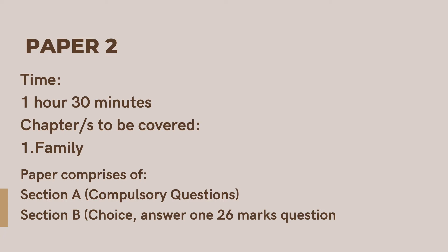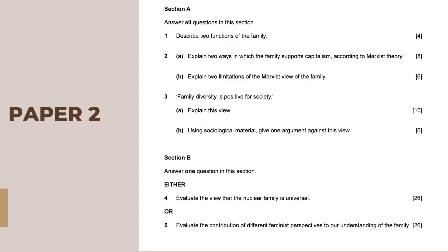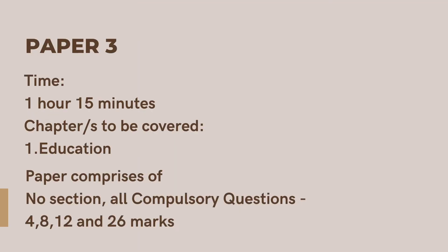Paper two follows a similar pattern to paper one. Section A has all compulsory questions: question one is four marks, question two is divided into eight marks and six marks, and question three is ten and six marks. Section B includes two 26-mark questions and you have to attempt one. This again makes up a total of 60 marks. The marks and time are the same as paper one, but the chapters are different.